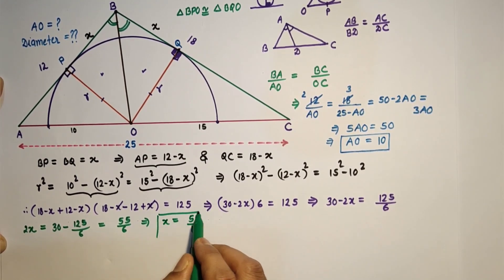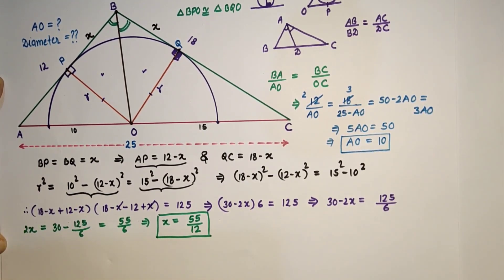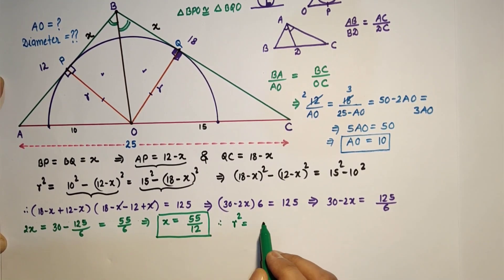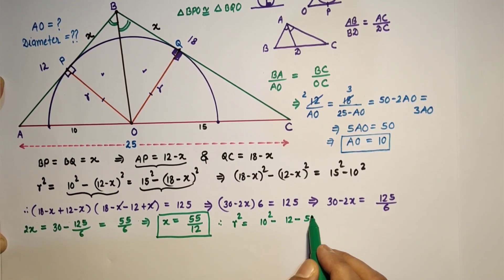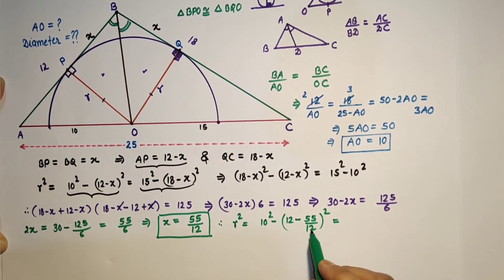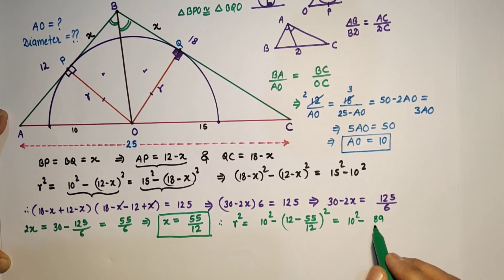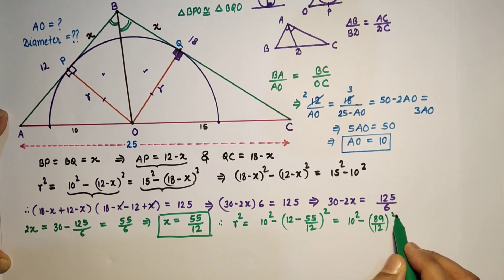This we found X. Now R² is equal to 10² minus (12 minus X)². We can use this. R² is equal to 10² minus (12 minus 55/12)². This we found value of X, 55 by 12. And this is equal to 10² minus (144 minus 55, so it will be 89 by 12)². It means R² is equal to (10 plus this) in one bracket, (10 minus this) in other bracket.